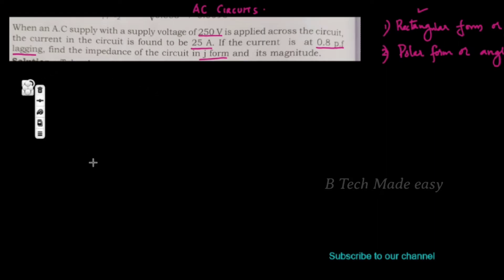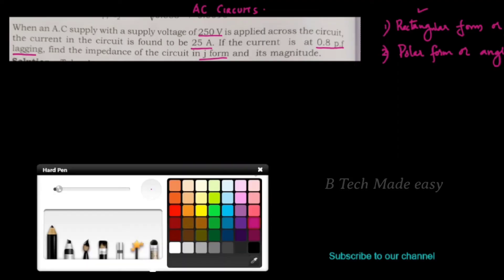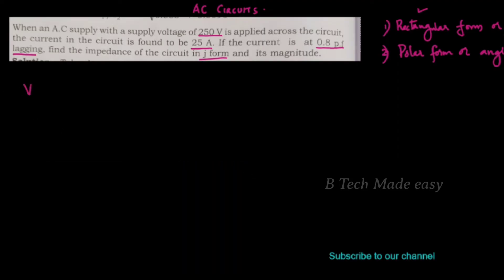The supply voltage V is equal to 250 volts. In J-form, this is represented as 250 plus j0, since it is applied across the circuit with no imaginary component.